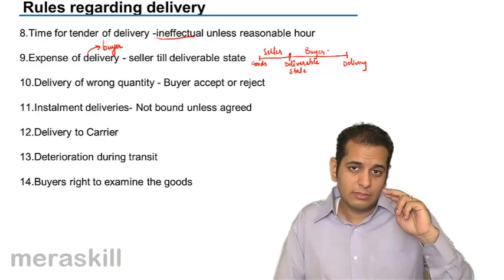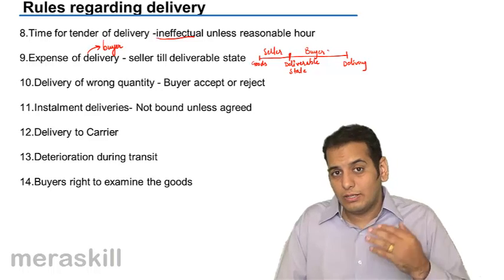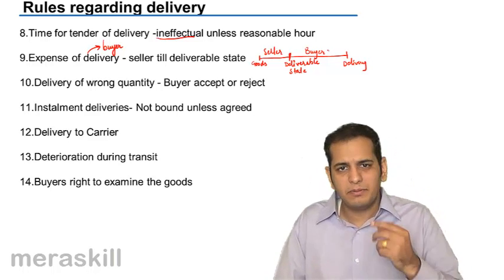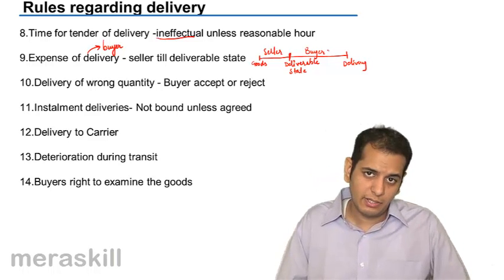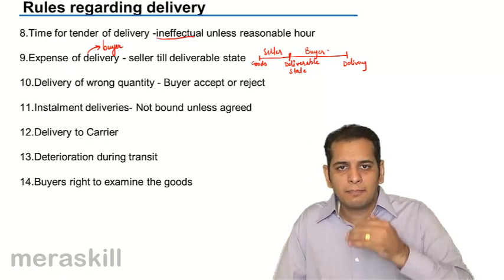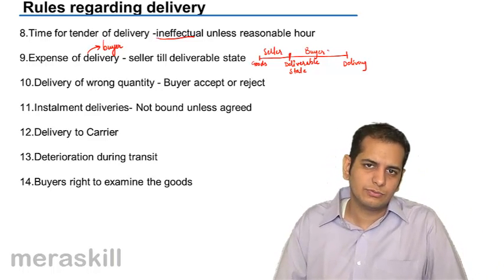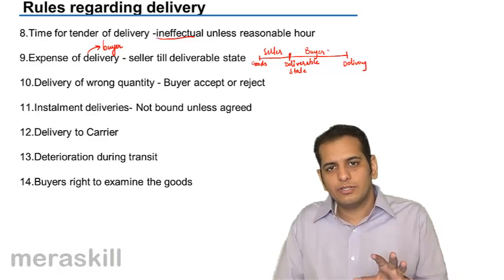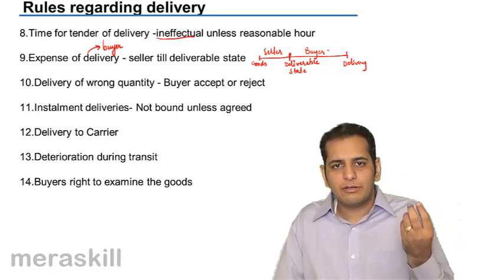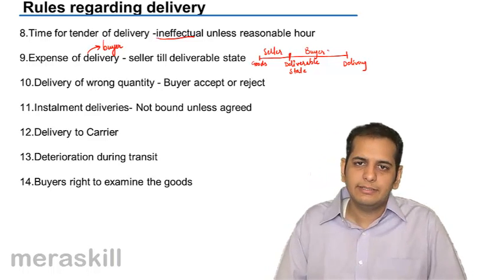If a larger quantity is sent — for example, you contracted for 100 bags but received 120 — you have three options. First, accept all 120 bags and pay for the difference. Second, reject all the goods. Third, accept 100 bags, the quantity contracted for, and reject the excess 20 bags. So for smaller quantity: two options — accept or reject. For larger quantity: three options — accept all, reject all, or accept contracted quantity and reject excess.